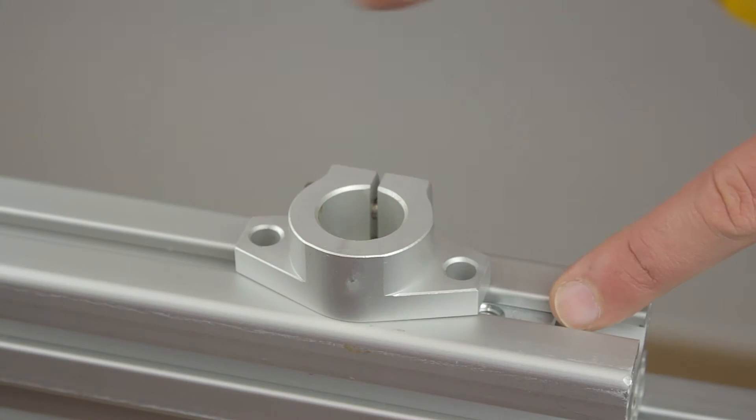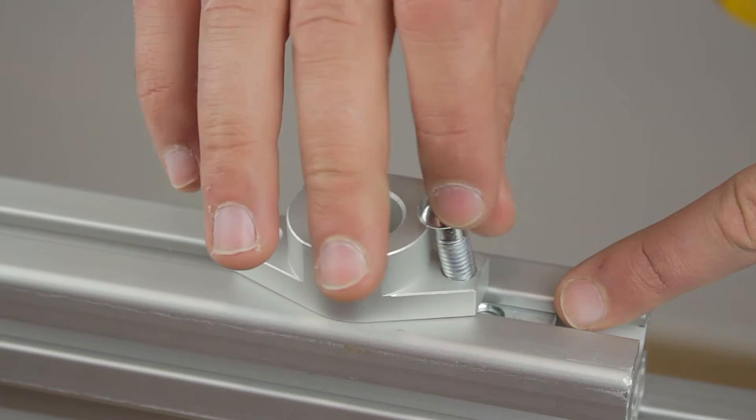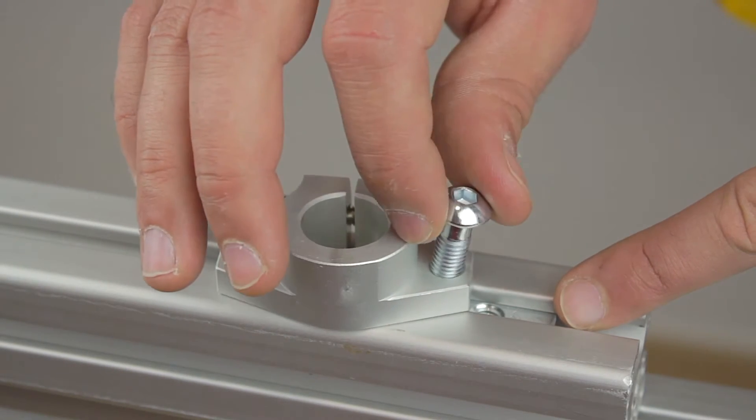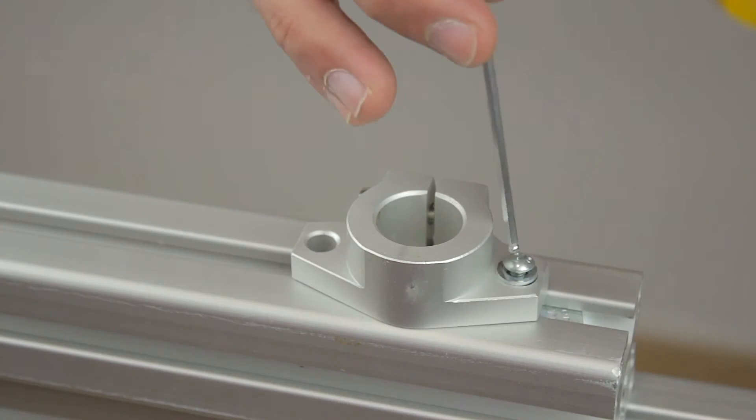For the mounting brackets of the linear rods we can't use the same M8 bolts and nuts since they won't fit, so we'll swap them with the M4 ones. Here we go!